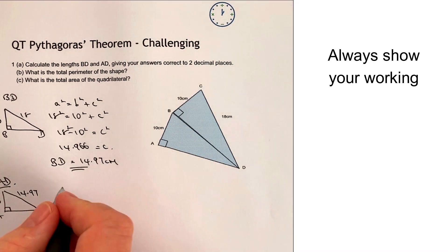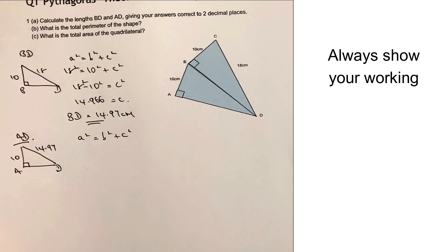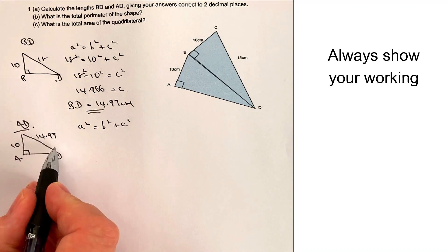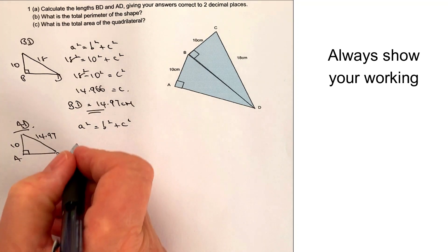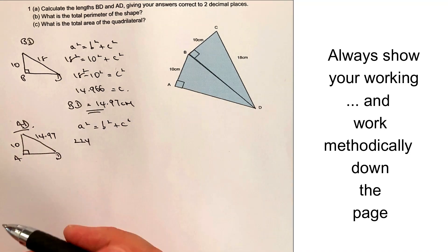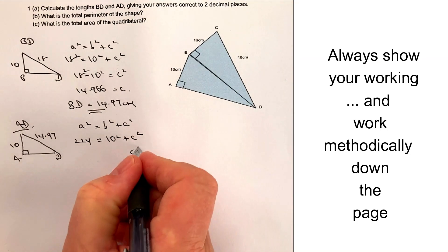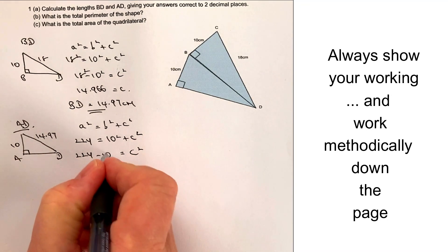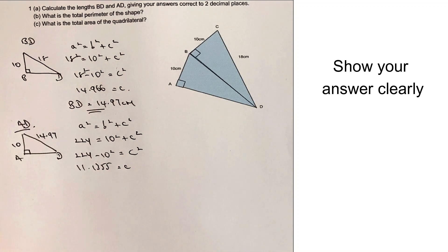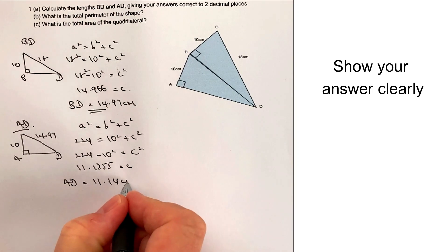Let's work out AD. I'm going to use A squared equals B squared plus C squared. I know that A squared is the hypotenuse along here, and it's actually 224 because of my initial calculation — this C squared equals 224. So 224 equals 10 squared plus C squared. I've got to make C squared the subject, so it's 224 minus 10 squared. That gives me 11.1355, which equals C. Therefore AD is equal to 11.14 centimetres to two decimal places.